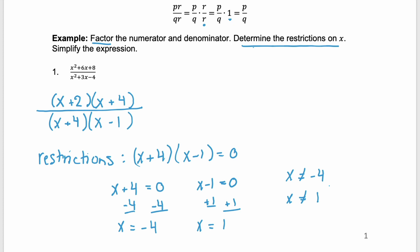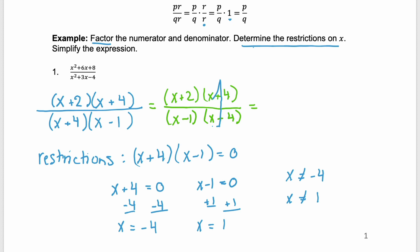Next we need to simplify the expression. To simplify, we look at the numerator and denominator to see what they have in common. If we rewrite the numerator and denominator — keeping the numerator in the same order and changing the order of factors in the denominator — we see the factors of x plus 4 appear in both, and they simplify to 1. This simplifies all the way down to x plus 2 over x minus 1.